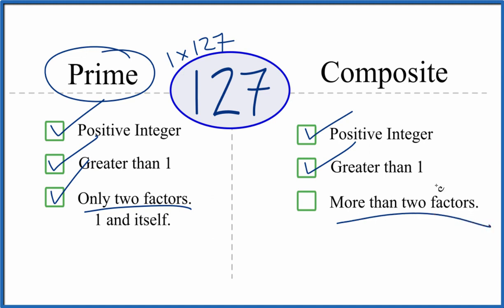But are there more than two factors? We said there's only two factors, so it does not have more than two factors. It's not a composite number.